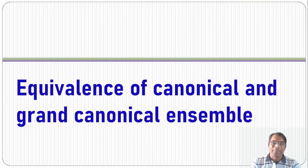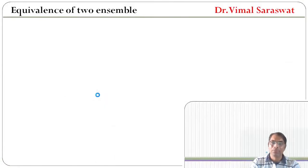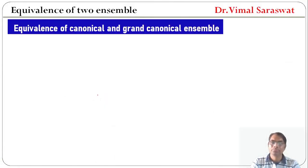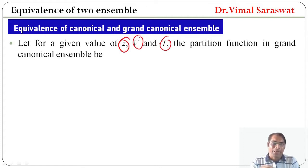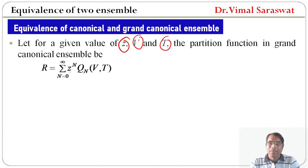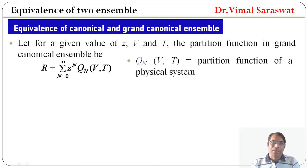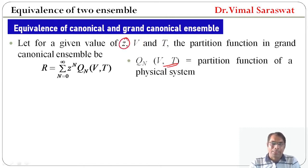Equivalence of Canonical and Grand Canonical Ensemble. For a given value of z, V, and T, the partition function in the Grand Canonical Ensemble is given by: r equal to sigma, n equal to 0 to infinity, z raised to n, Q(n,V,T). Here, Q(n,V,T) is the partition function of a physical system. z is fugacity, V is volume, and T is temperature.